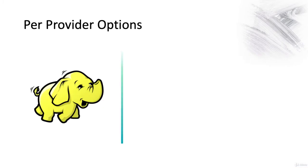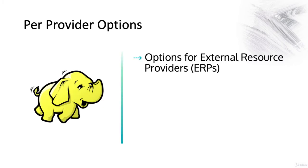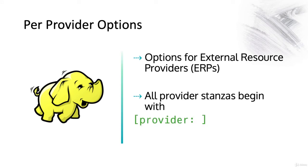Per provider options are for external resource providers — often this is Hadoop. We won't go too deeply into ERPs in this class, but they are like search helpers often used for streaming data, for example from Hadoop. All provider stanzas begin with 'provider:', then the provider name.